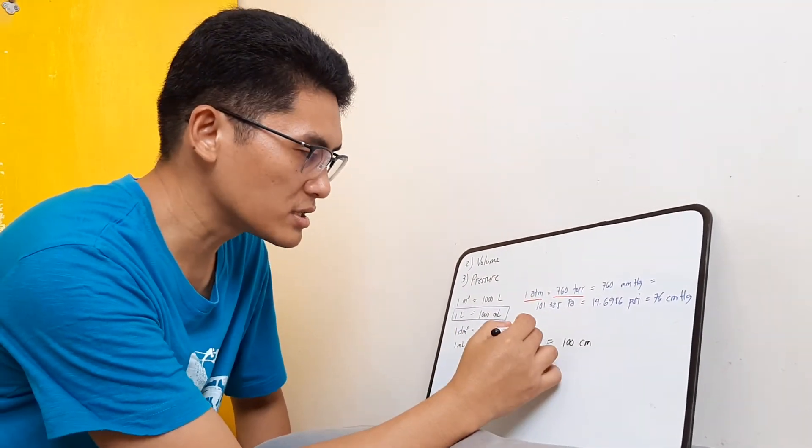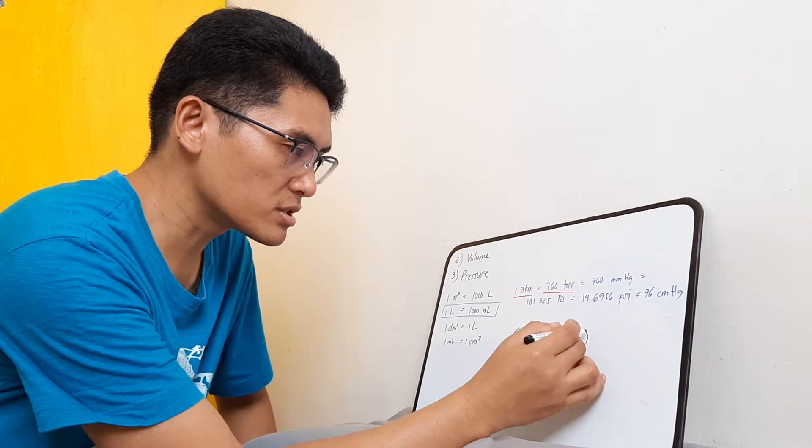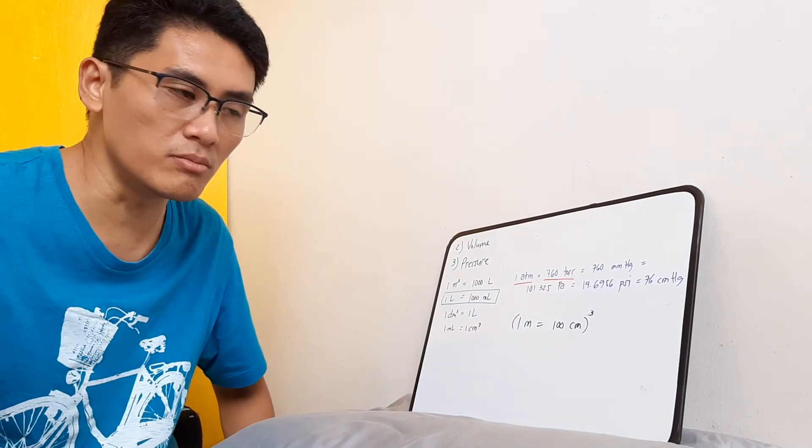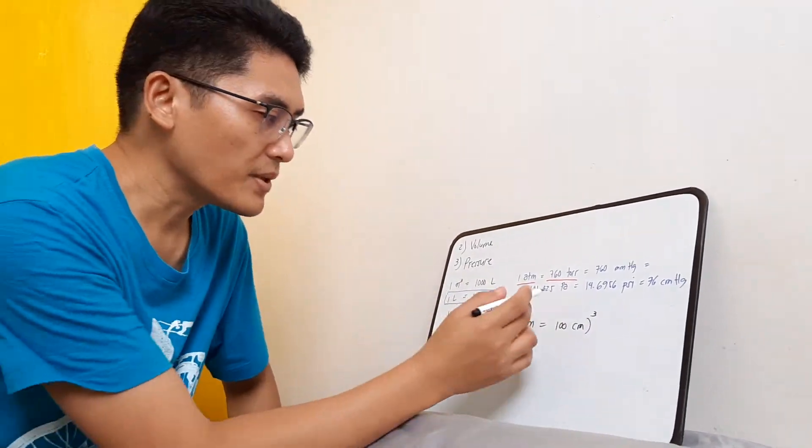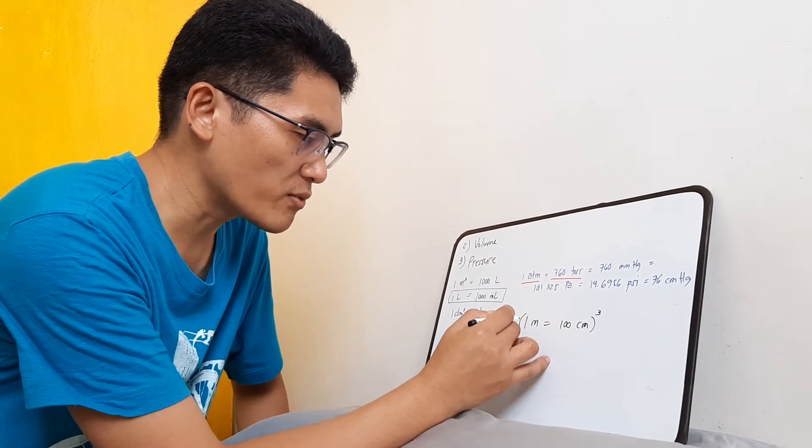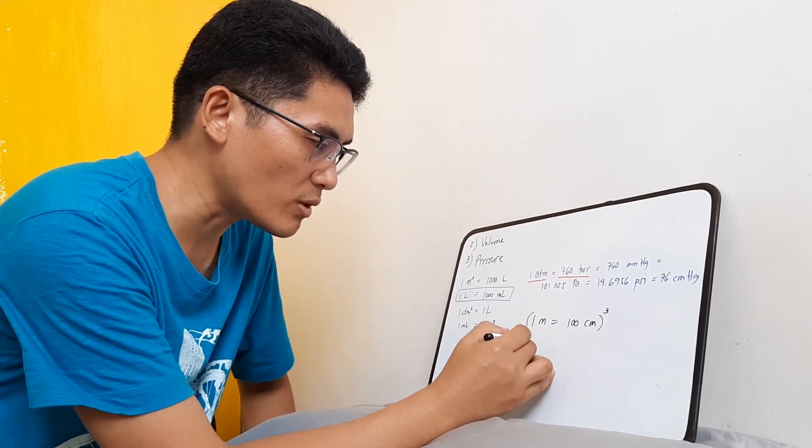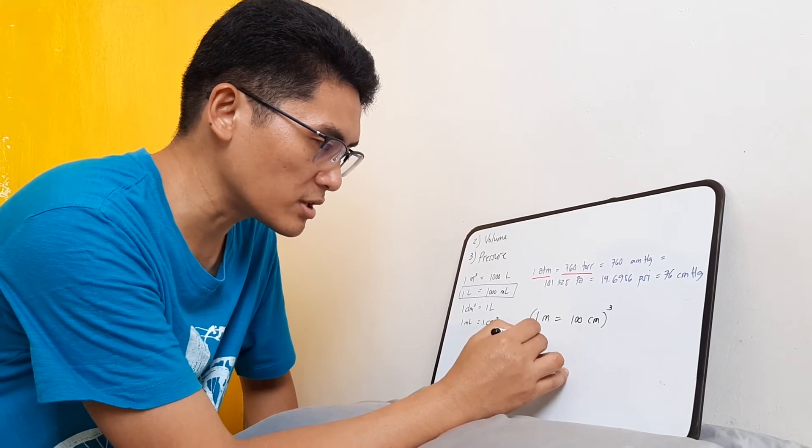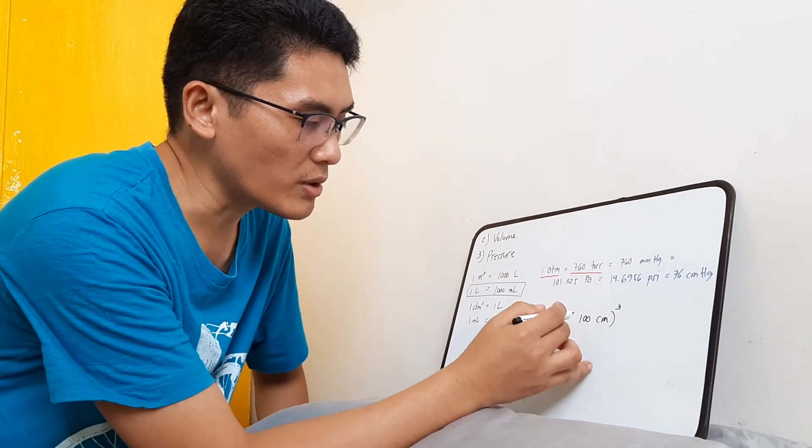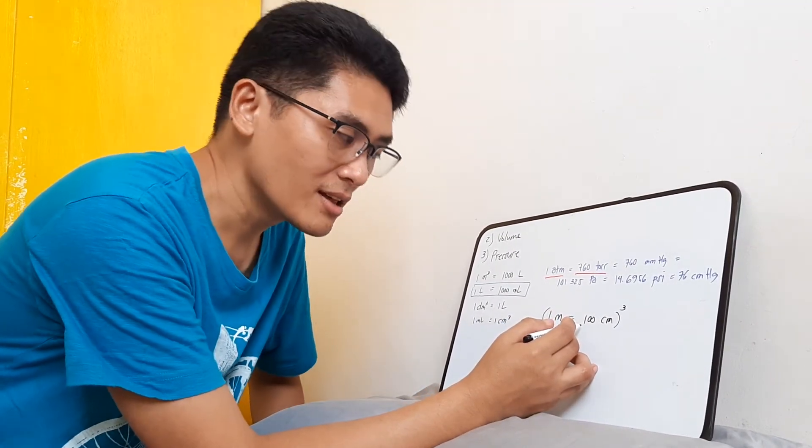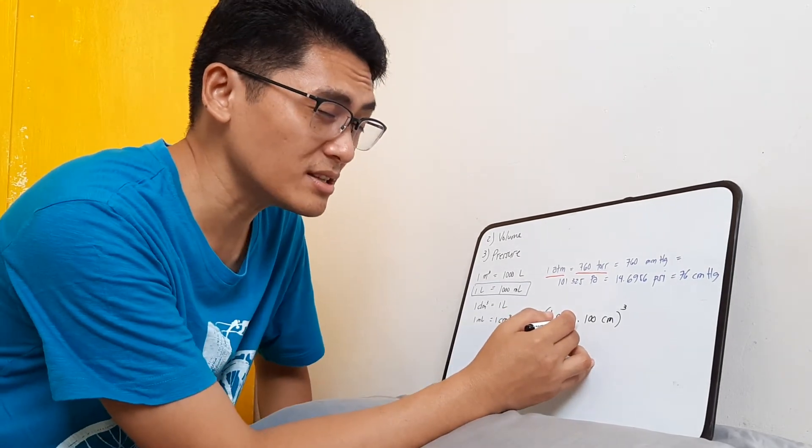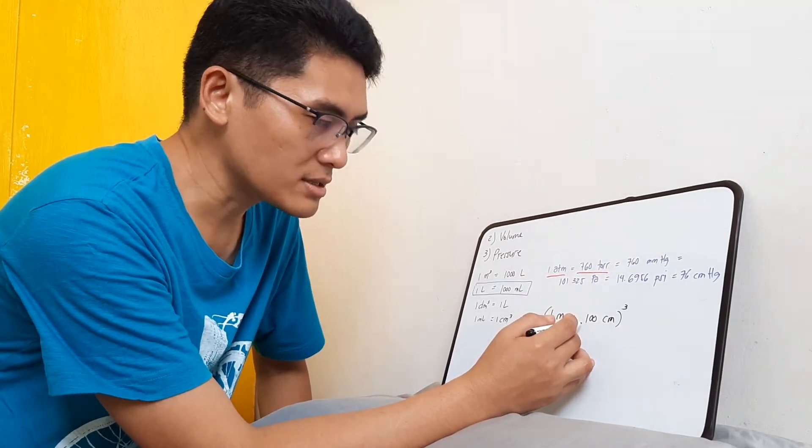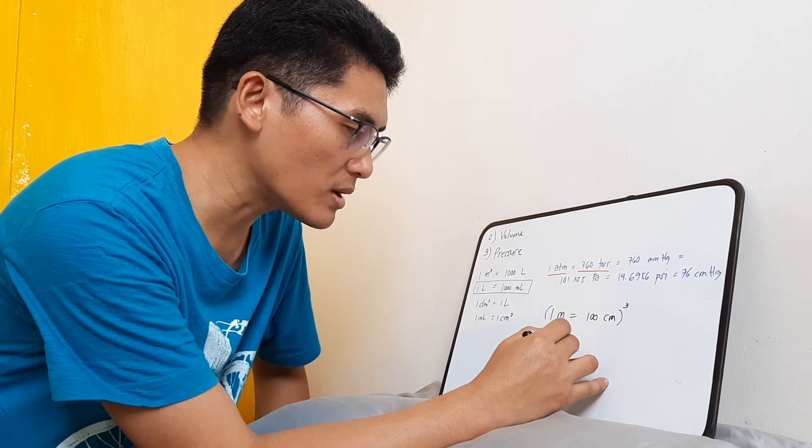And what that does is you would have 1 times 1 times 1, which is 1 meter times meter times meter, which is a meter cubed. Then that gives you 100 times 100, that gives you 10,000, times 100, that gives you a million.